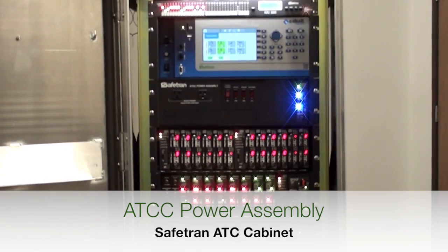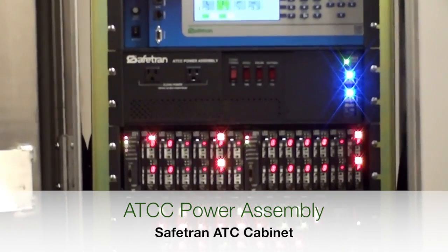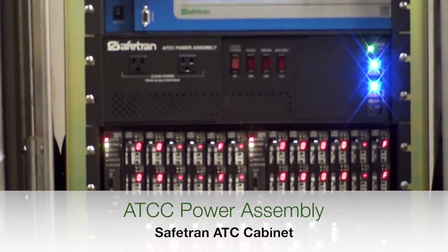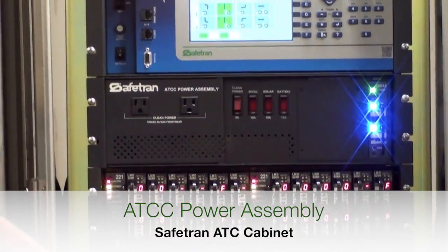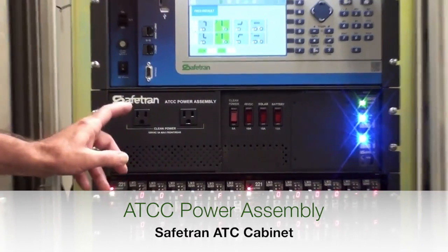Here is the power assembly. Notice the flasher is located in the power assembly. By locating the flasher in the power assembly, most of the other sub-assemblies in the cabinet can be removed while maintaining the intersection in a safe flash mode.